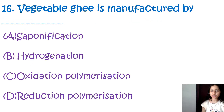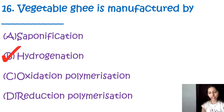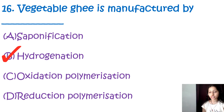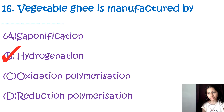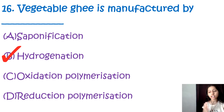Question number 16: Vegetable ghee is manufactured by — saponification, hydrogenation, oxidation, polymerization, or reduction. The correct option is B, hydrogenation. Vegetable ghee is manufactured by the process of hydrogenation, in which hydrogen gas is added to unsaturated vegetable oil to convert it to saturated fats. This process solidifies the oils and gives them a texture similar to animal fats such as ghee.